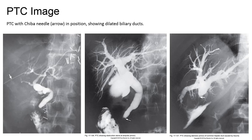Percutaneous transhepatic cholangiography, abbreviated PTC, is performed on patients with jaundice when the ductal system has been demonstrated as dilated by computed tomography or sonography, but the cause is unclear. It may also be used to place a drainage catheter to treat obstructive jaundice. For these procedures, the patient lies supine with their right side surgically prepared and draped. Local anesthetic is administered and a special skinny needle is inserted. Water-soluble iodinated contrast is injected under fluoroscopy, filling the ductal system, and spot AP projections are recorded.